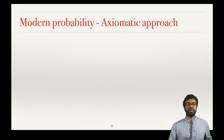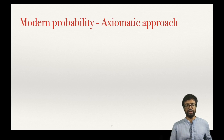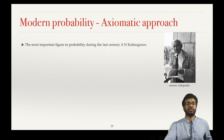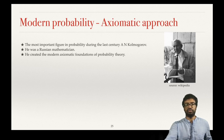Modern probability is what one would call an axiomatic approach — similar to what Euclid did for geometry, where he came up with axioms from which all theorems of geometry can be proved. The person called Kolmogorov is one of the most important figures in probability in the last century. He was a Russian mathematician who created the axiomatic foundations of probability theory.